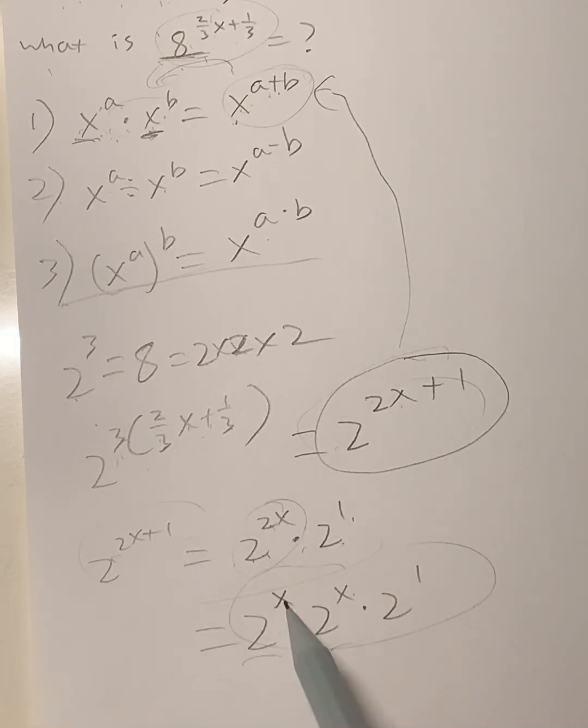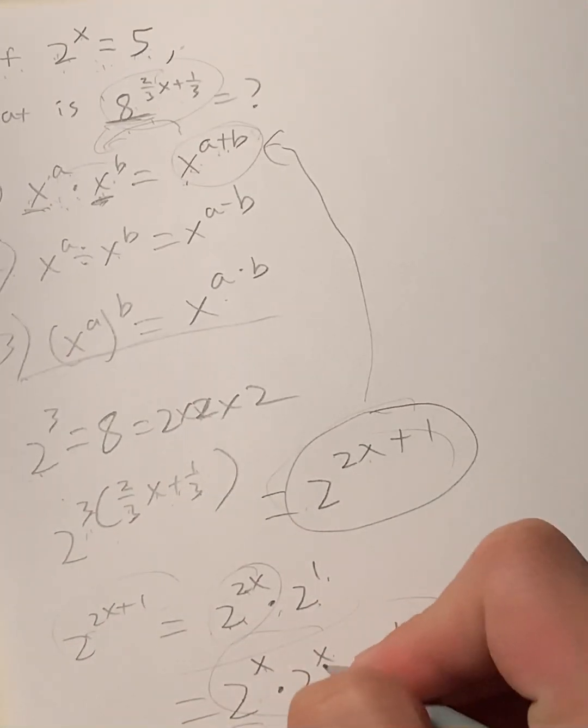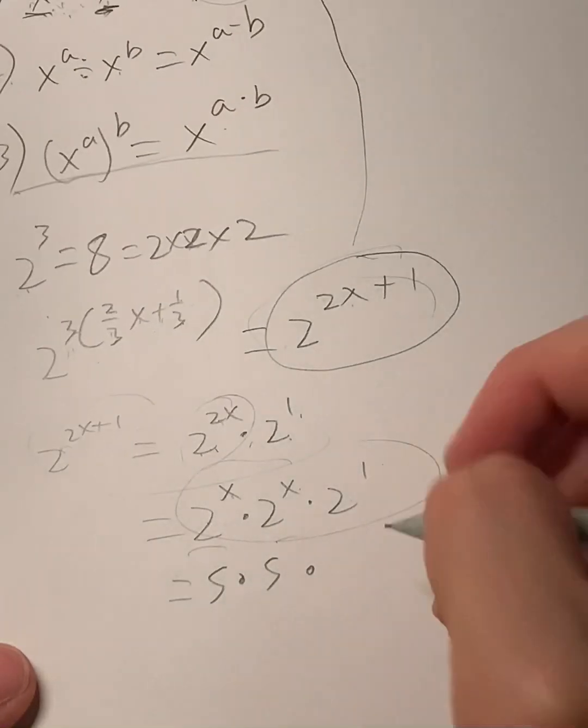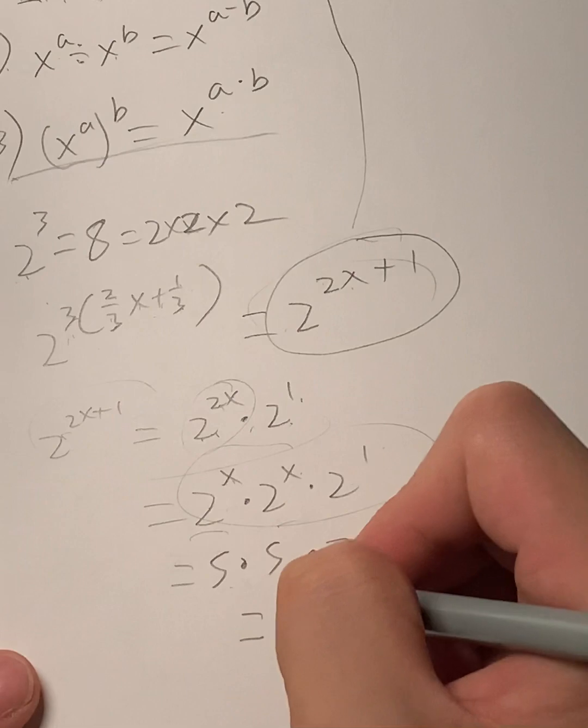So what's the value of 2^x? 2^x given by our question is equal to 5. So this equals five times five times what's 2^1? That's equal to two. Five times five times two gives us a solution of 50.